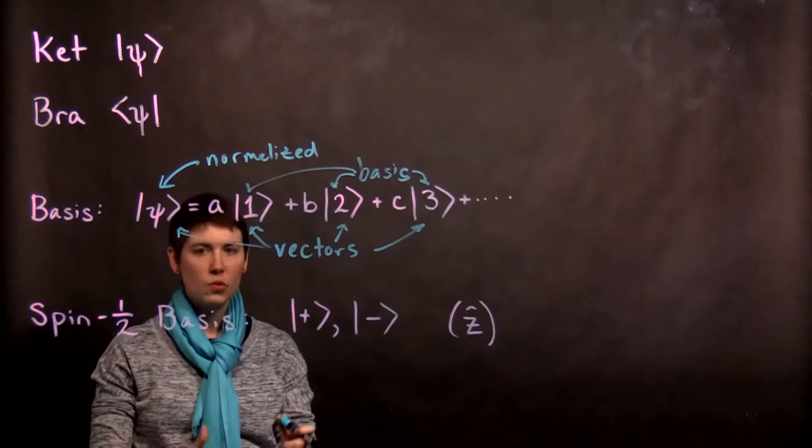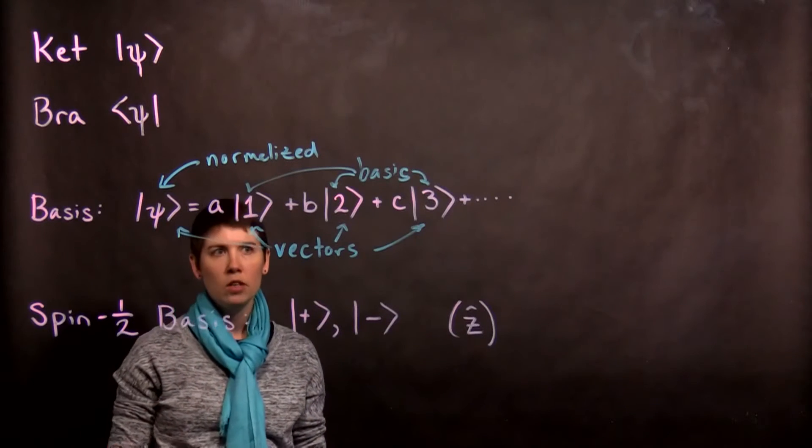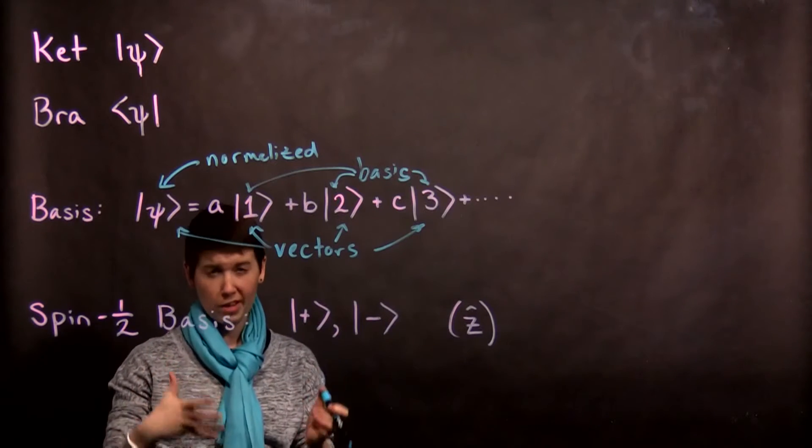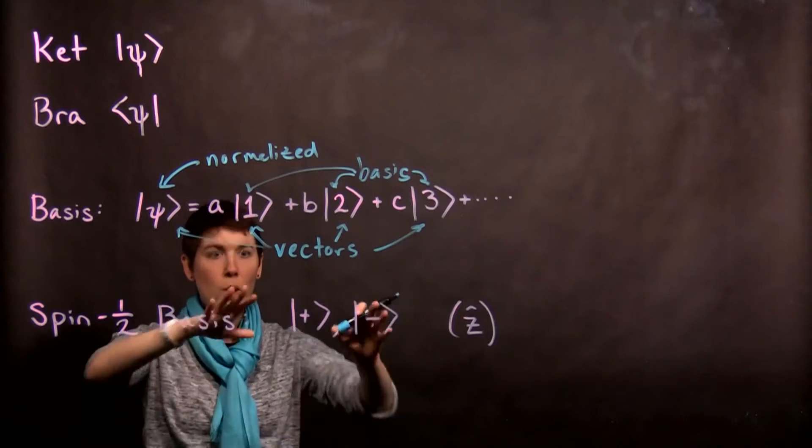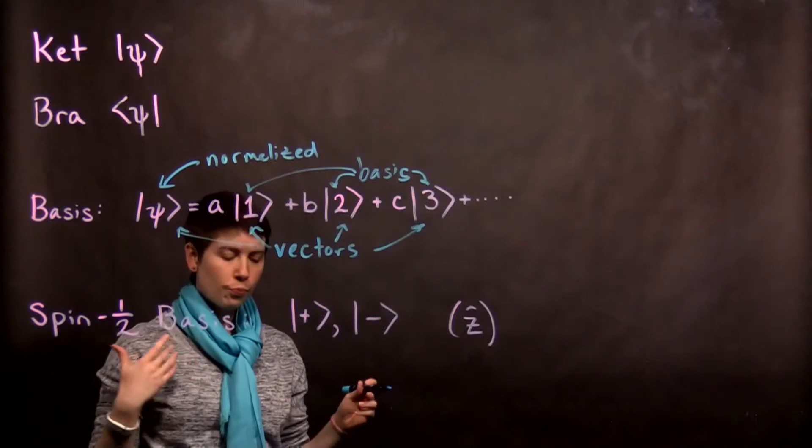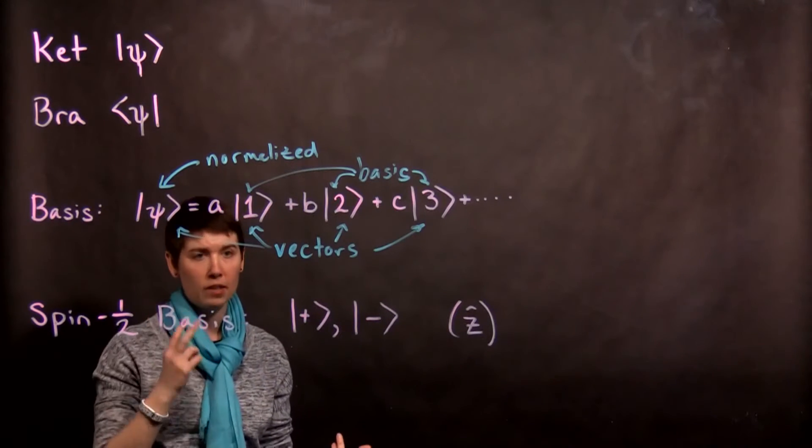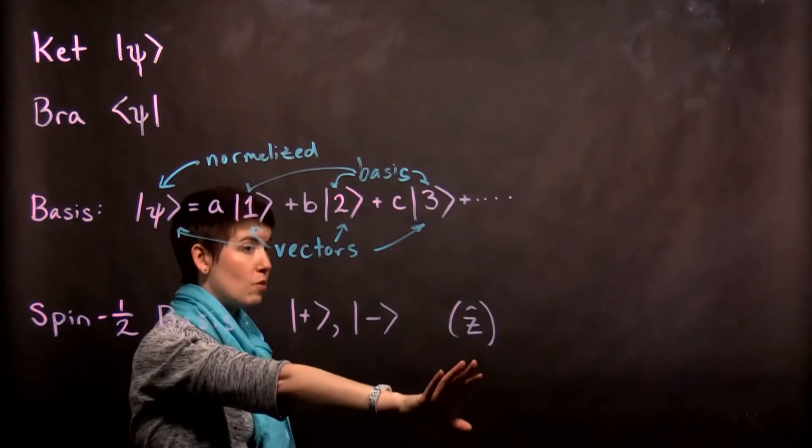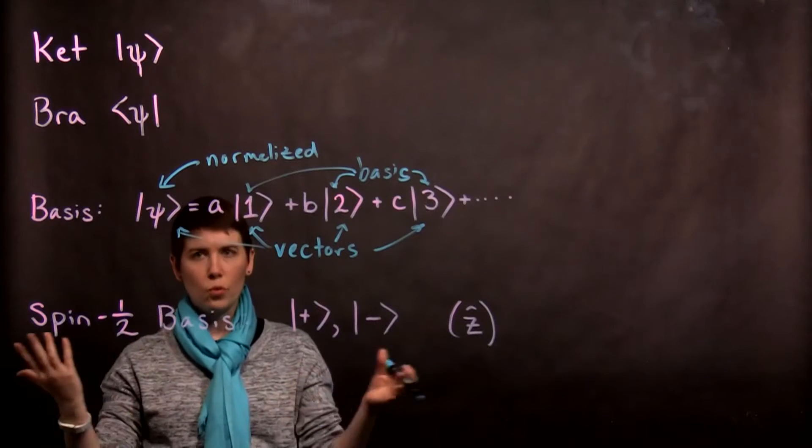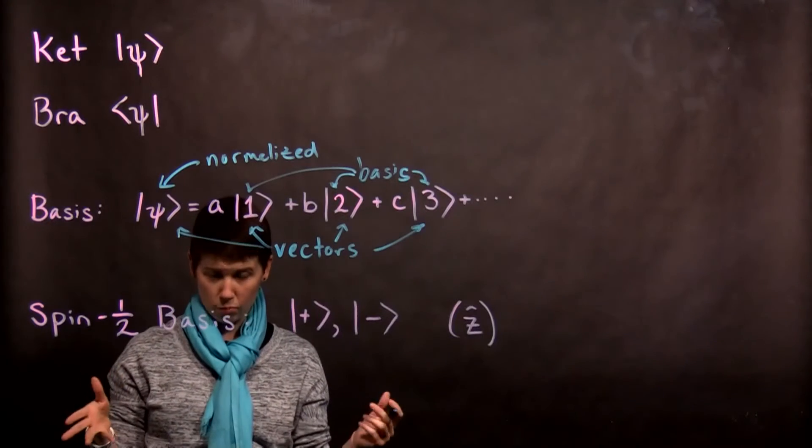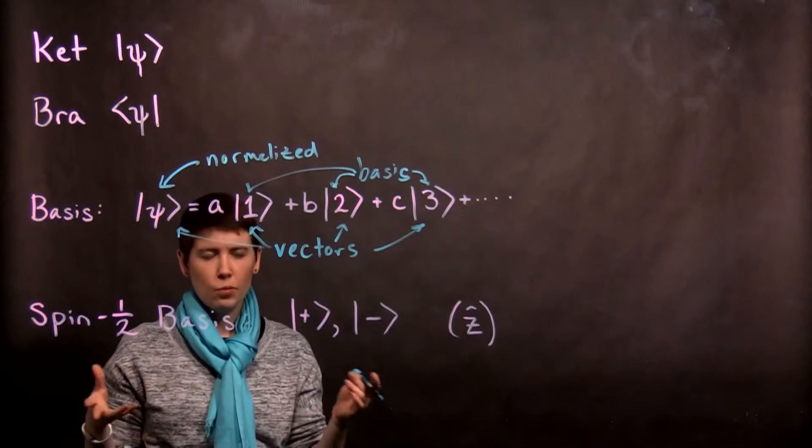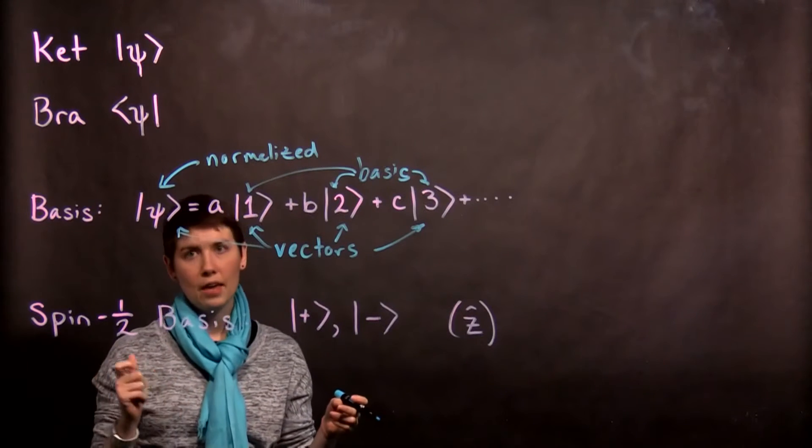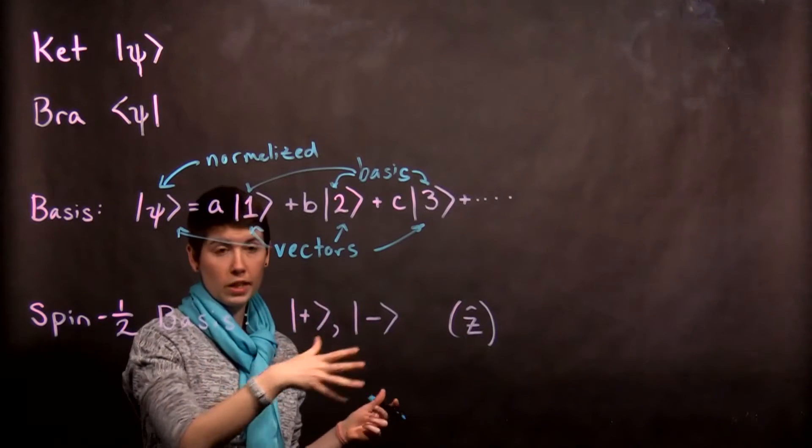Now we're going to be starting with spin one-half. So a lot of these tools that we're learning are going to seem quite simple because we're working with a simple quantum system, but it's going to generalize. So with spin one-half we have two possible states: spin up and spin down. And this is going to be in our z basis. So most of the time we're just going to work with the z basis to begin with, and it's kind of arbitrary what direction you pick.